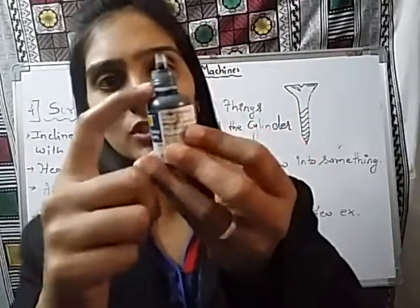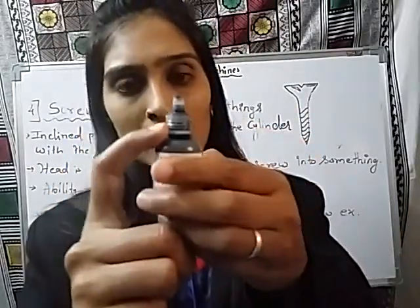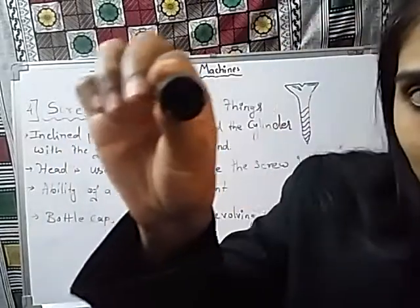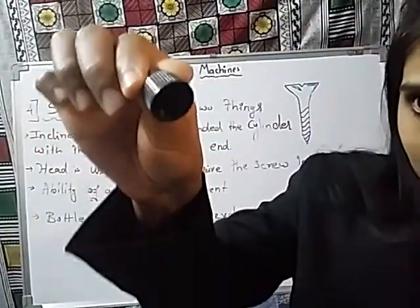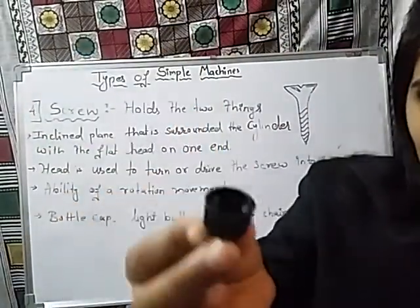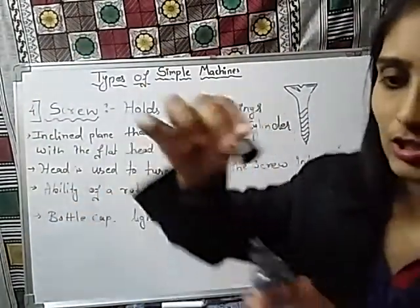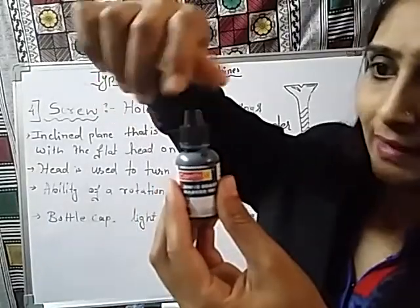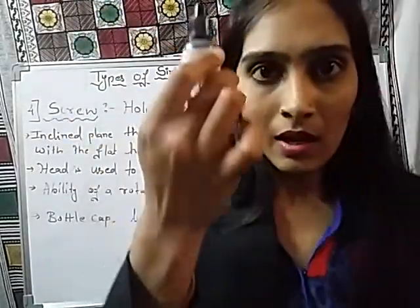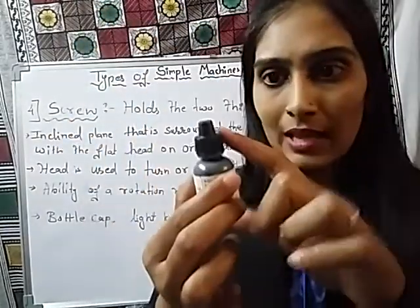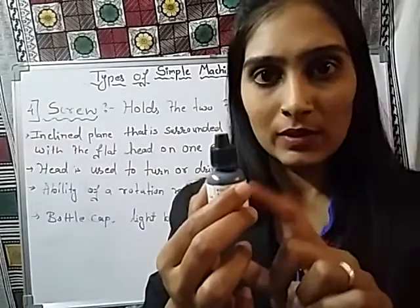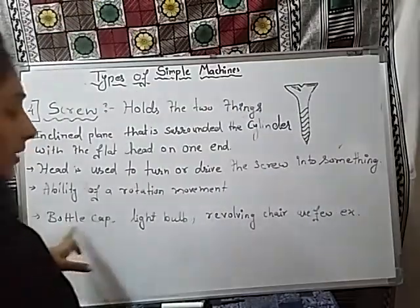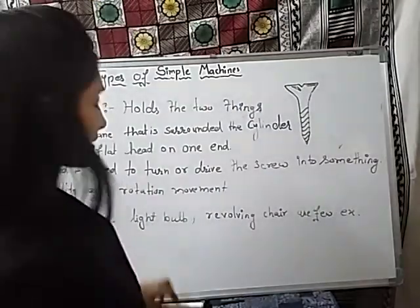You can see certain notches on the bottle and also some notches inside this cap. These notches are fixed so that this cap is attached to the bottle. This is the example of the bottle cap.